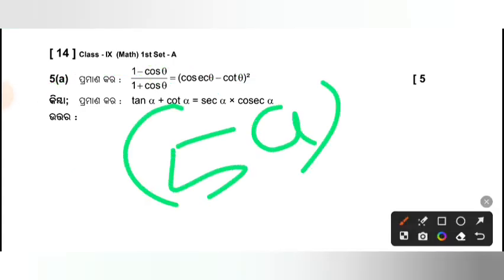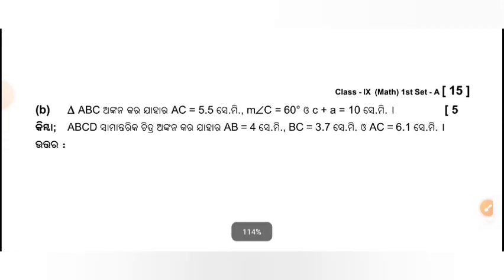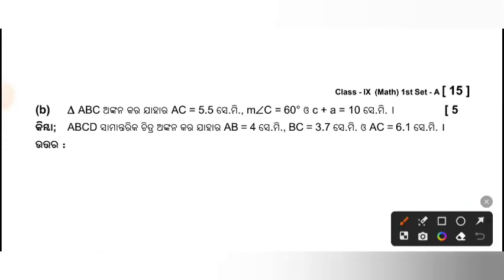Then there were no questions. Next question. Next question. Triangle FBC has 5.5 cm, C is 70, C is 10.